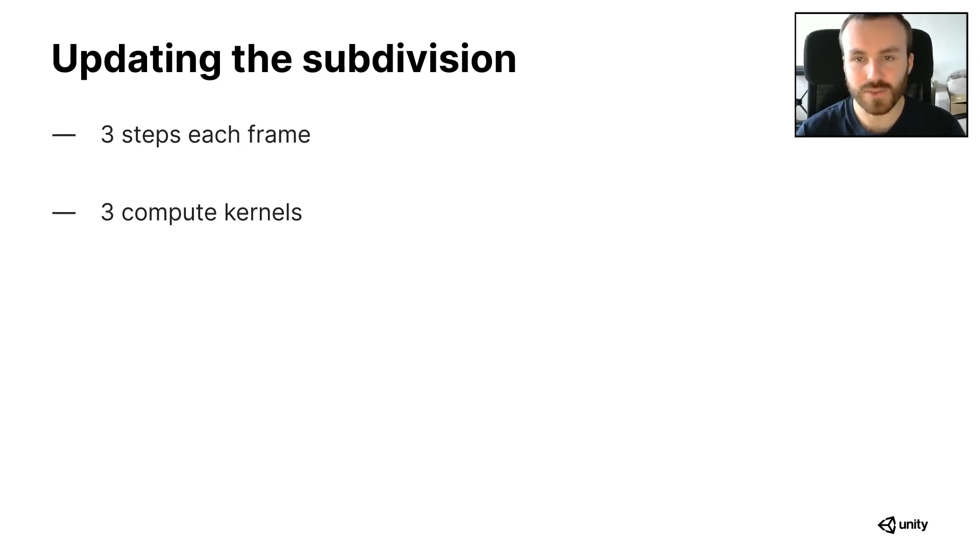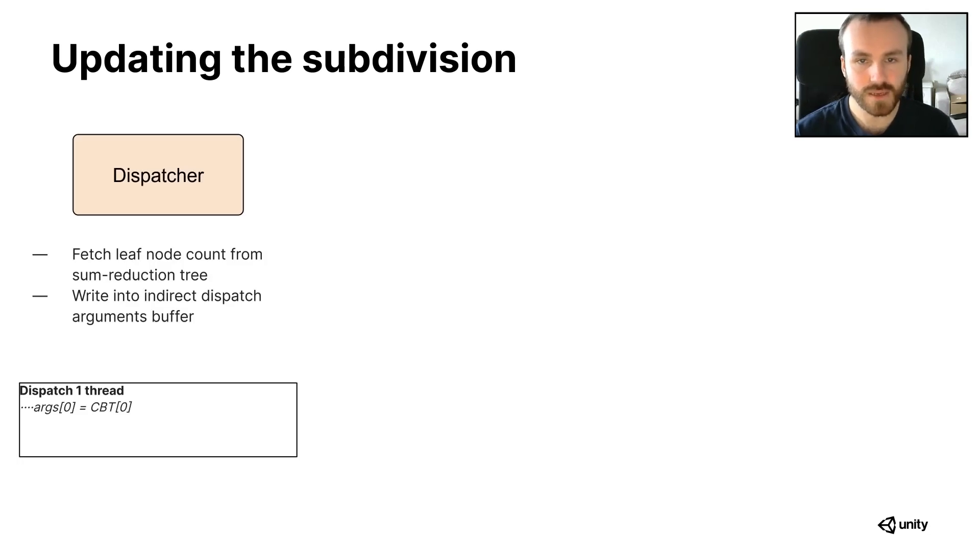There are three different steps now that we need to perform each frame during the update loop to update the longest edge bisection. And in practice, they correspond to three different compute shaders.